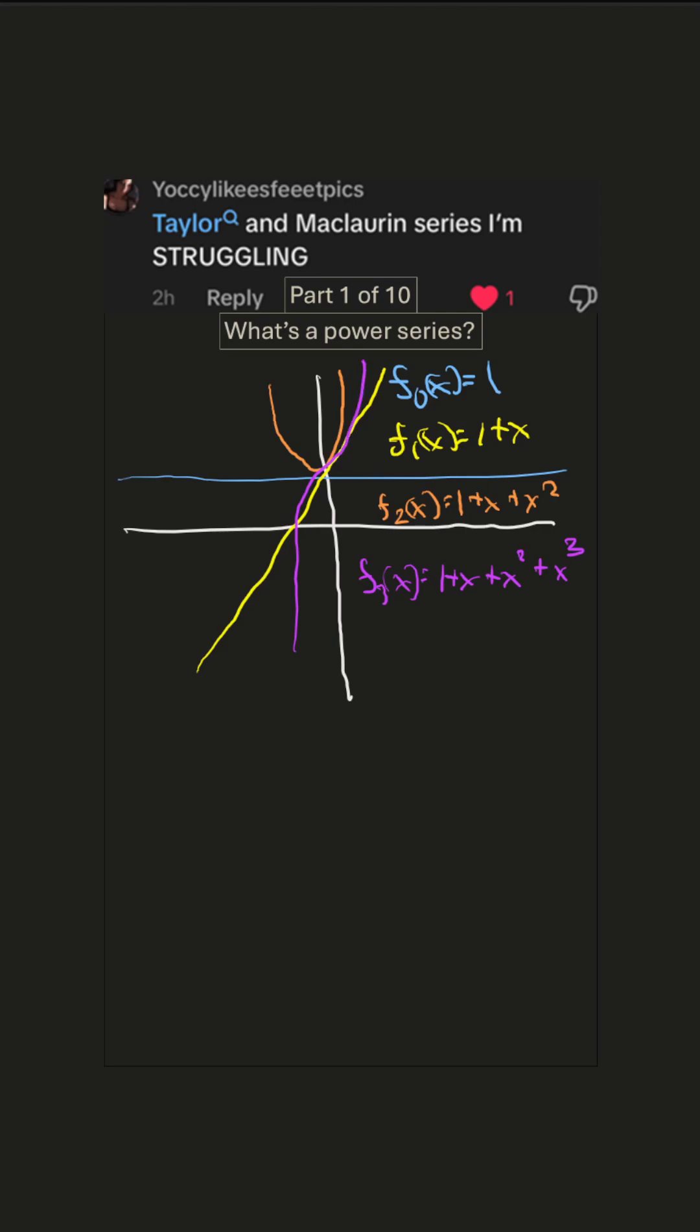And every time we do that, it adds some more details to the graph, some more features. So we'll go up one more graph here. Up to the x to the fourth. And this one's almost a parabola, but it's got a weird little bump in it.